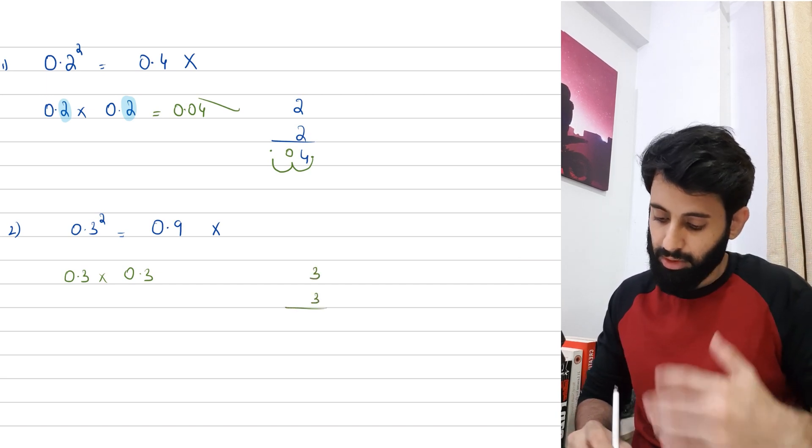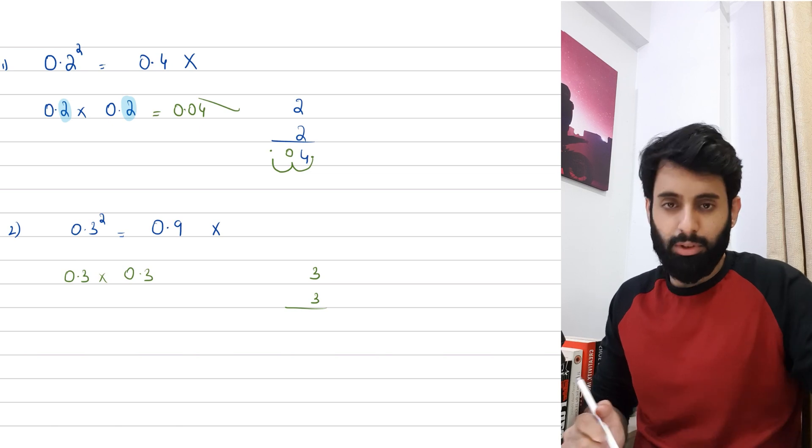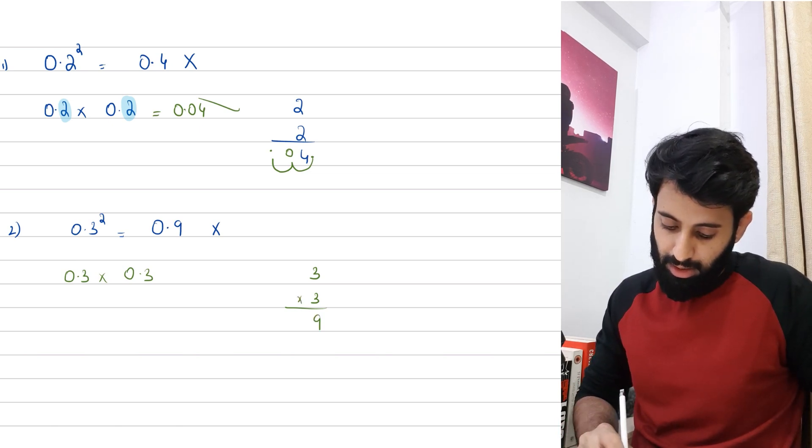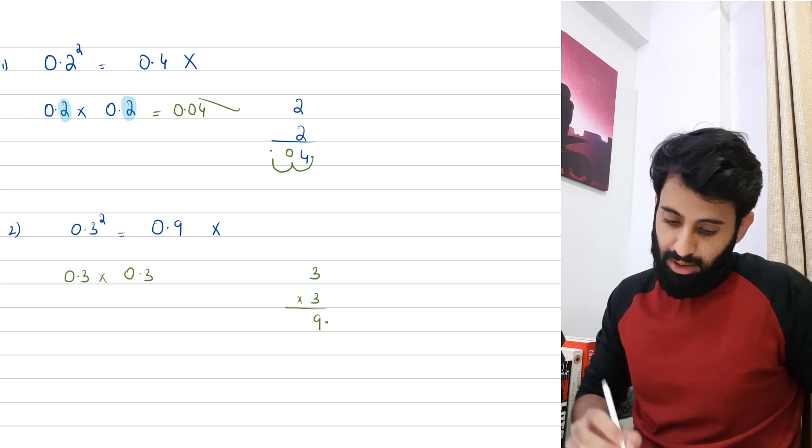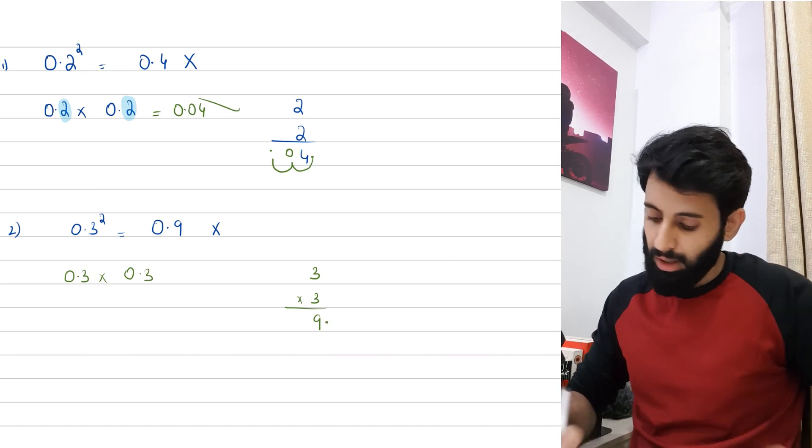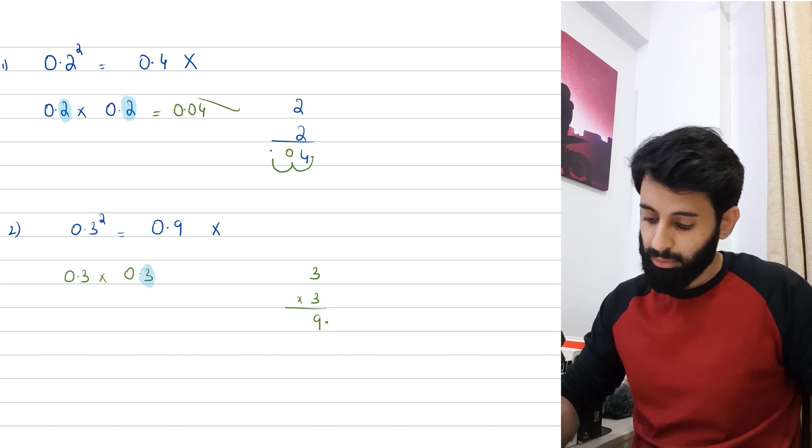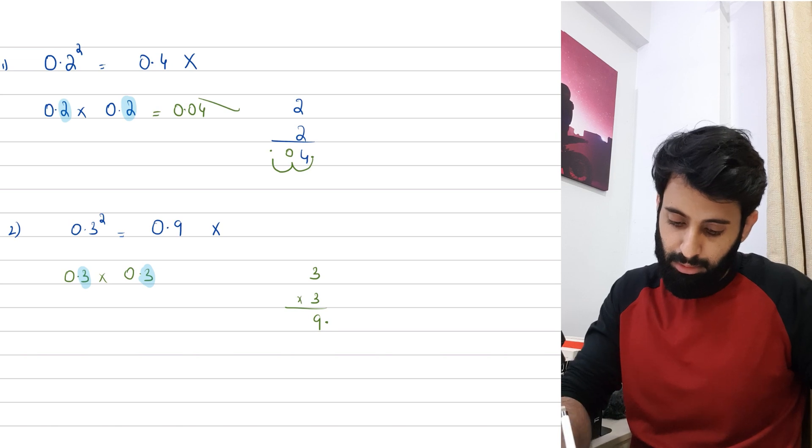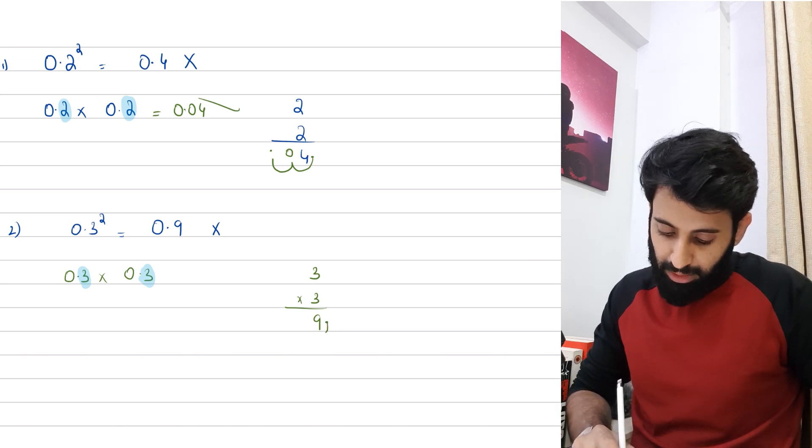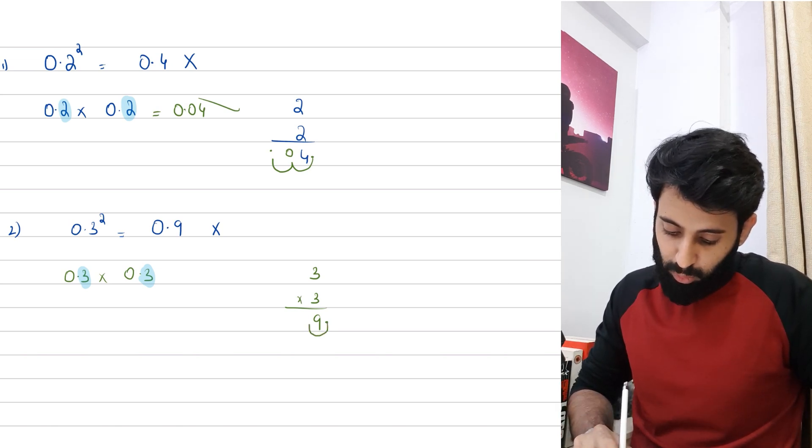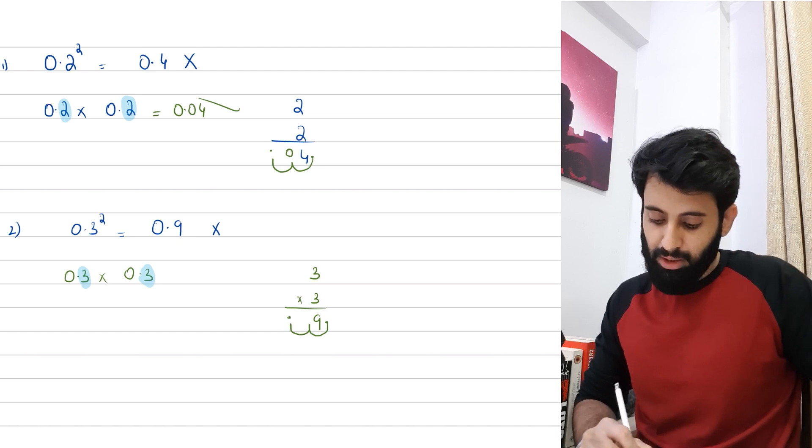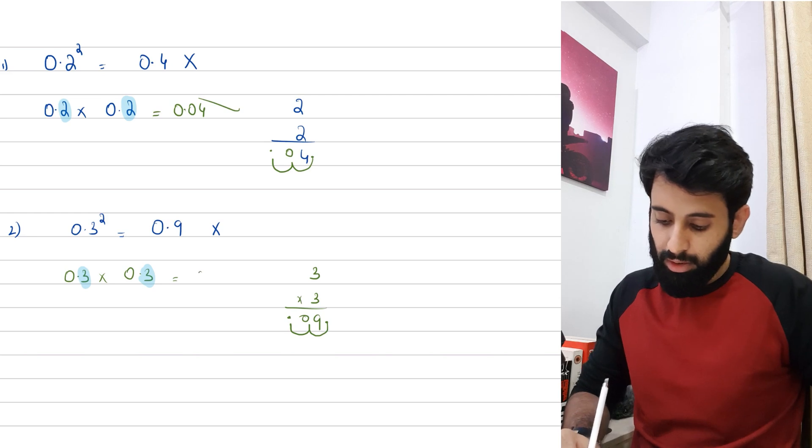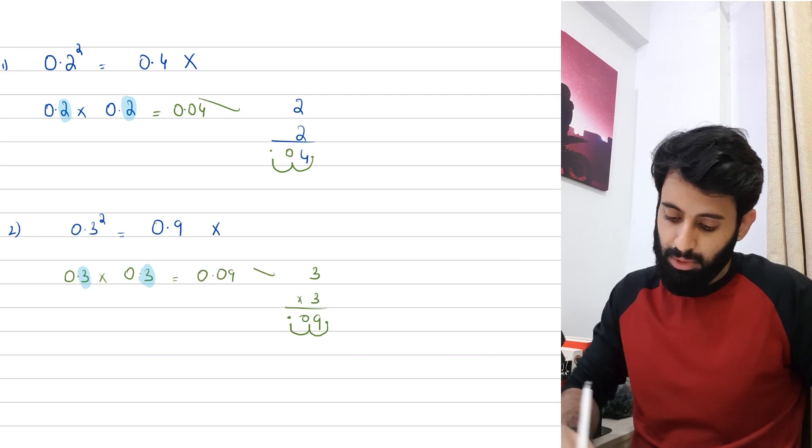So 0.3 squared basically means 0.3 times 0.3. What I'm going to do is for the time being forget about the decimal and just focus on the non-zero integers. So 3 times 3 as we all know is 9. Let's see how many decimal places we have in total - one with 0.3 and the other with 0.3, so that's all together two decimal places. I'm going to bring the decimal two places backwards, so here's 1 and here's 2, and we are looking at 0.09.